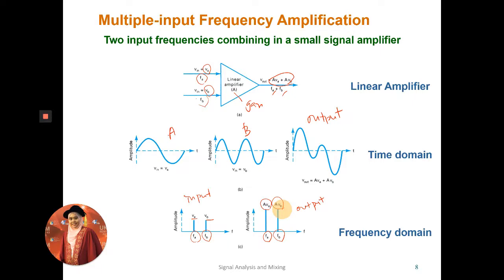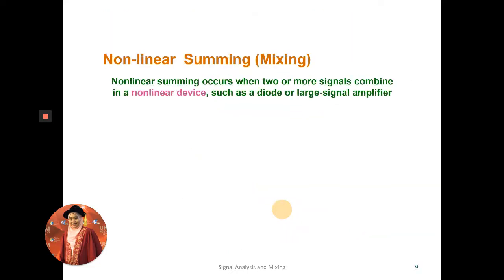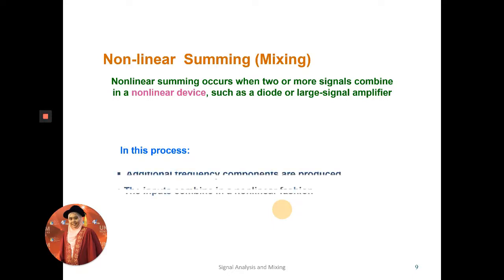For non-linear summing or non-linear mixing, two or more signals are combined in a non-linear device such as a diode or large-signal amplifier. In this process, additional frequency components are produced at the output. The inputs combine in a non-linear fashion, meaning the output is not a simple, predictable sum — for example, 2V and 5V at the input may not produce 7V at the output.